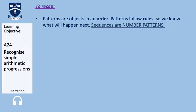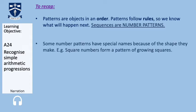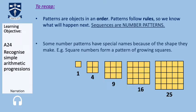To recap, we have looked at so far: patterns are objects in an order, patterns follow rules so we know what will happen next. Sequences are number patterns. Some number patterns have special names because of the shapes they make. For example, square numbers form a pattern of growing squares — you saw this last lesson.